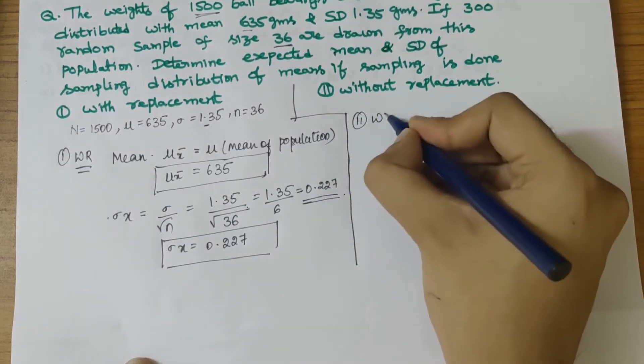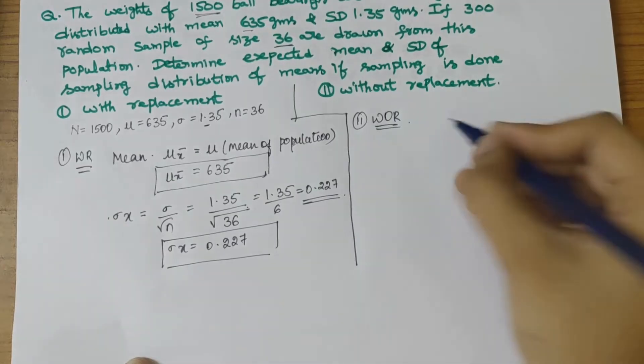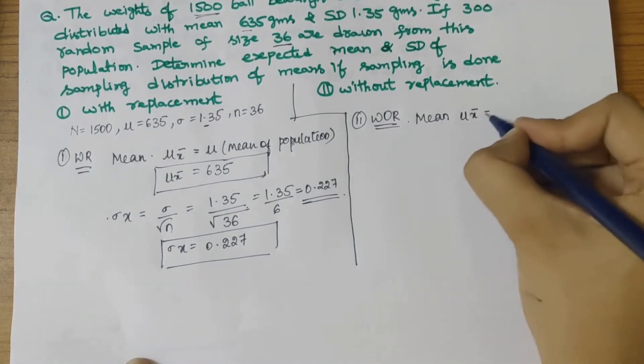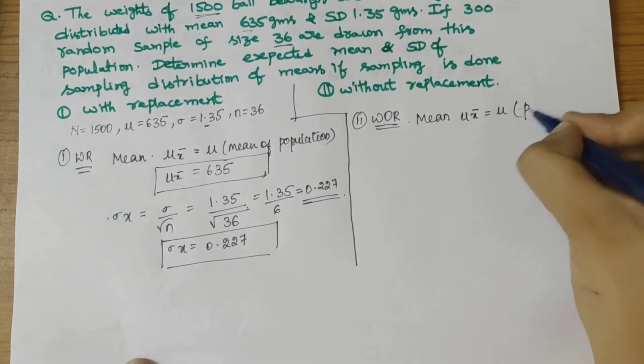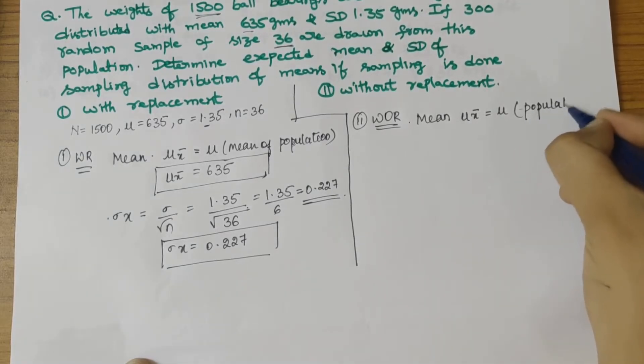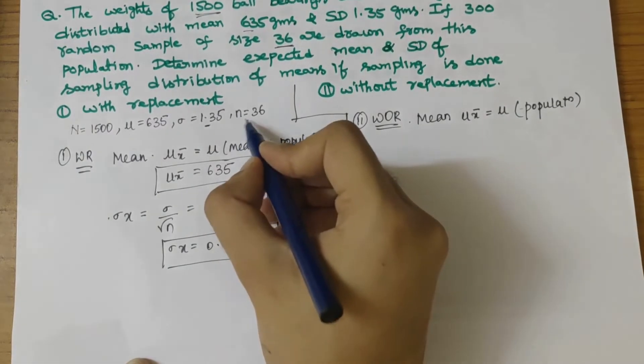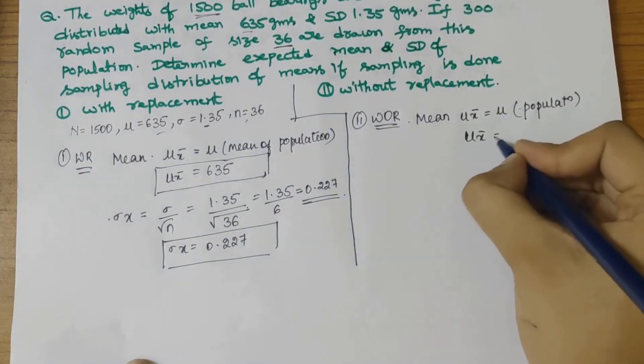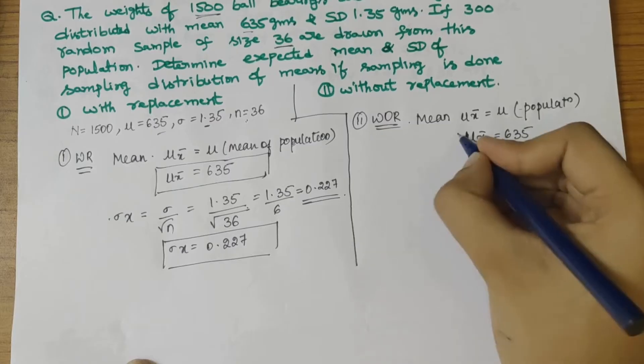Without replacement, we know that the mean equals the population mean. The population mean is 635, so the mean here would also equal 635.